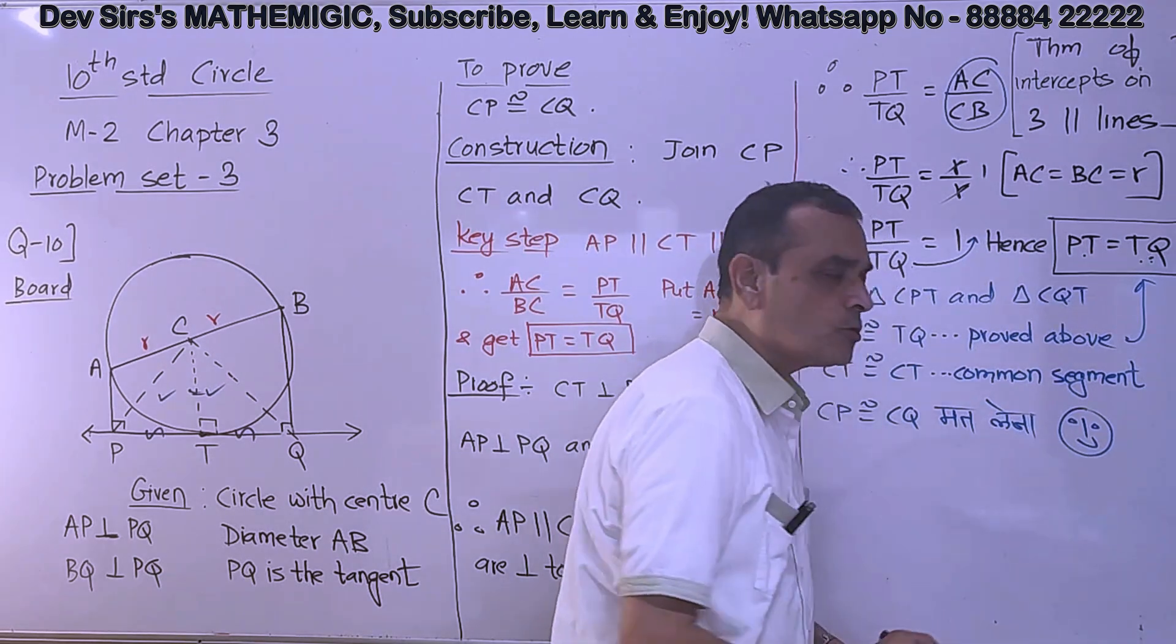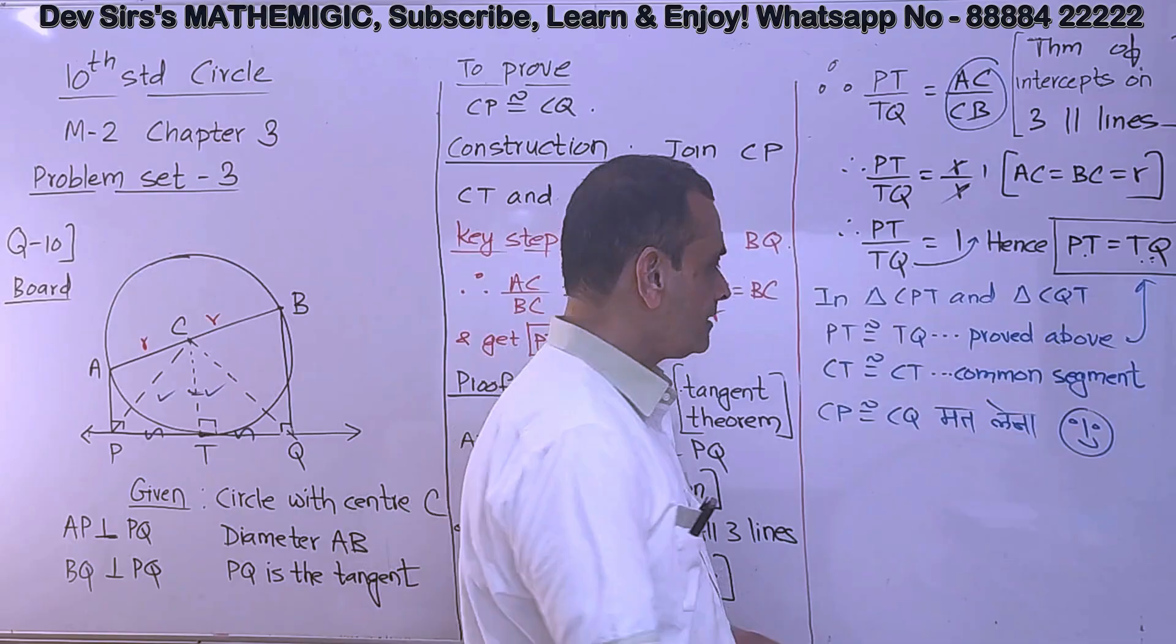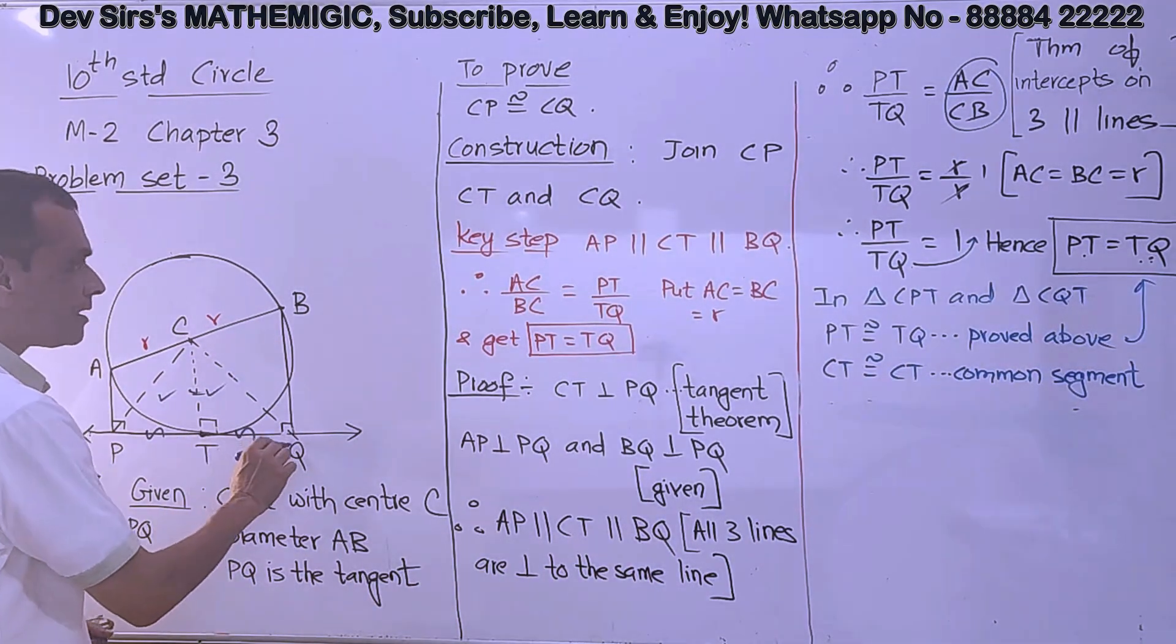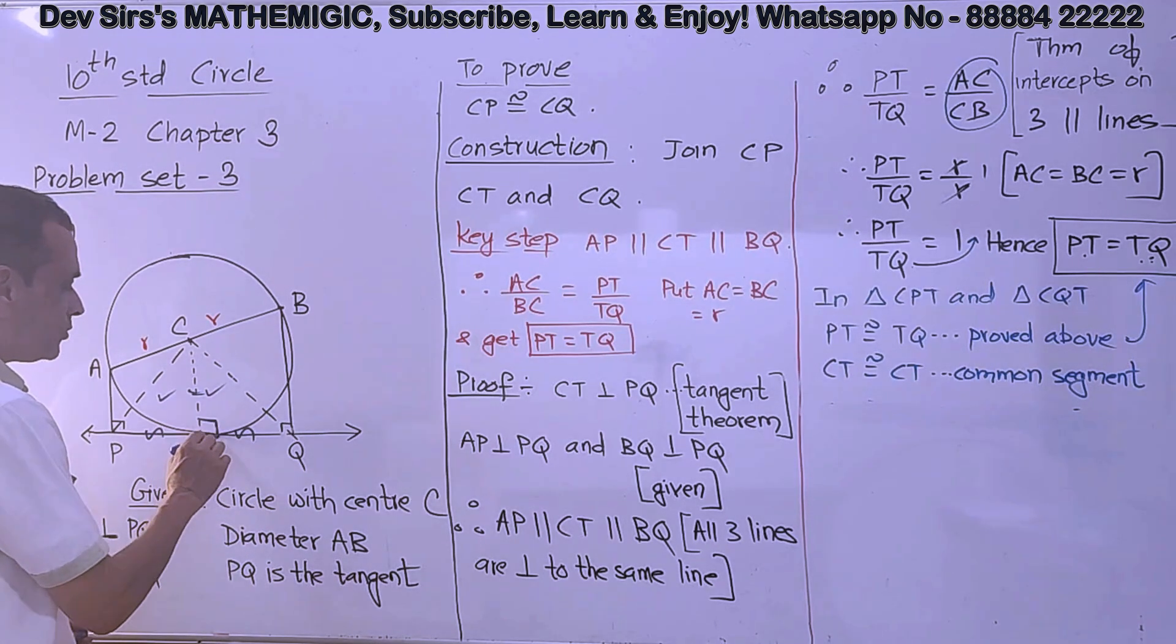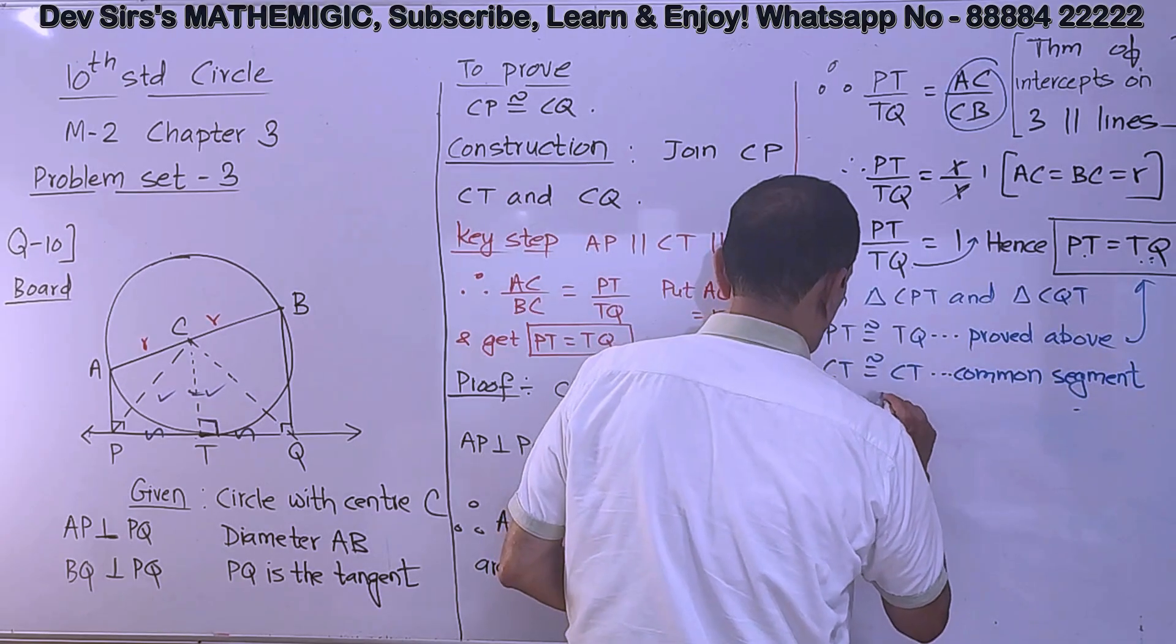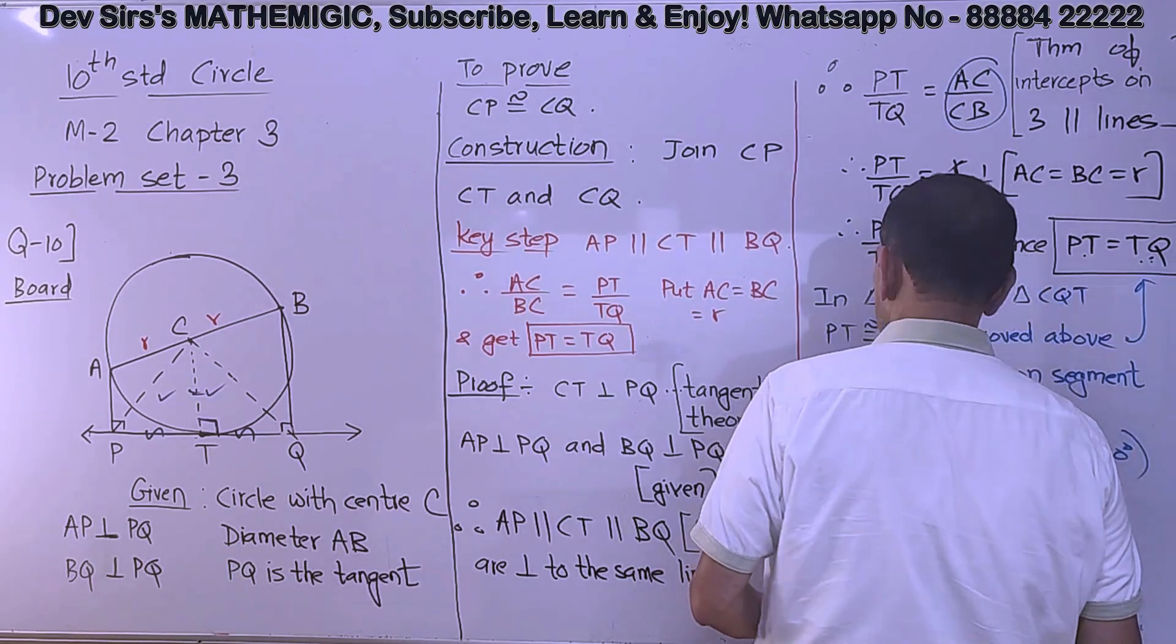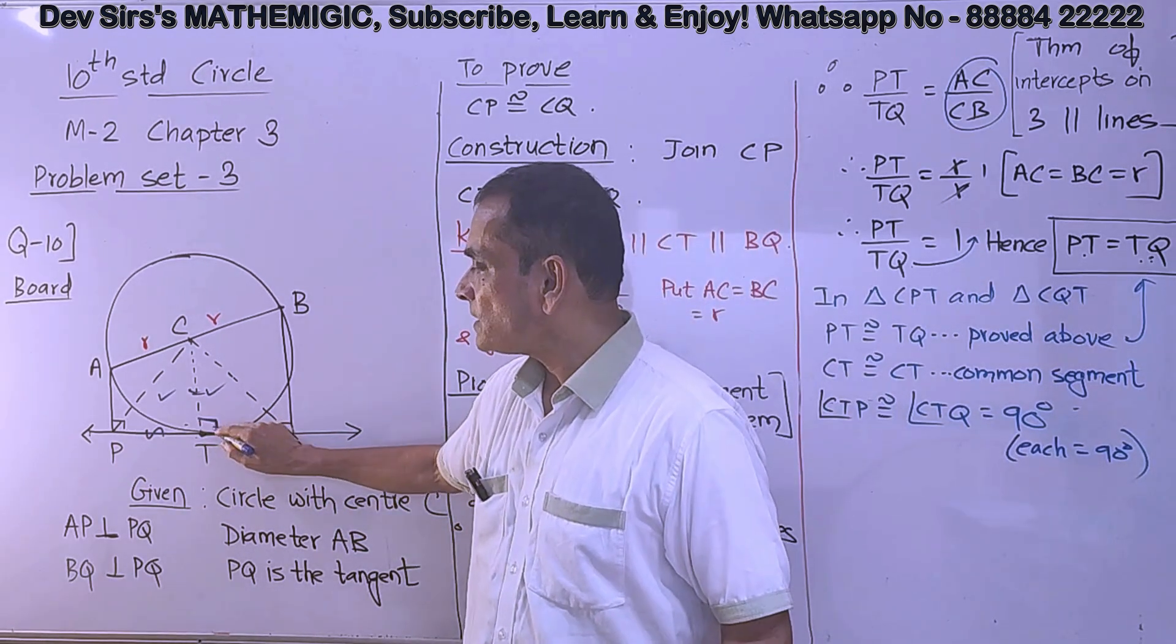So smiley is coming and telling us, don't take CP equal to CQ. He thinks we might take CP equal to CQ because they look like radii. But they are not radii. We have to show them congruent. Smiley knows. We know this. CP equal to CQ has to be proved. So what has happened? PT equal to TQ. CT congruent to CT. Common side. And can you tell me what is angle CTQ congruent to angle CTP? Each equal to 90. Each equal to 90. Why? Because radius perpendicular to tangent. Okay. So these two angles are 90 and 90. Simple.